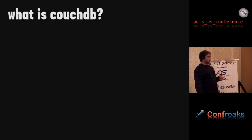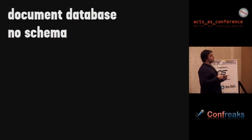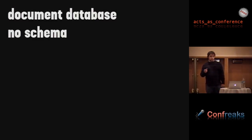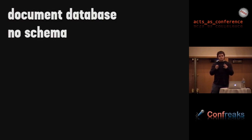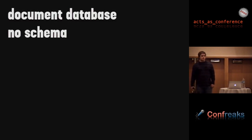So first, what is CouchDB? It's a document database and there's no schema — each document can have a different structure from the next one. Usually that's not too much of an issue, because all your user documents are going to look the same, all your blog posts are going to look the same. But what's nice is, for example with resumes, everyone's resume is different — some people have certain fields, some people won't — and coming up with a database schema that can handle every possible thing is pretty annoying.